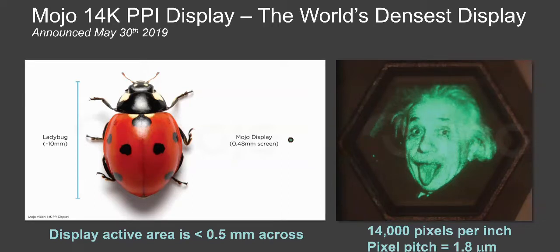So you can see on the left, here's a ladybug. And this is to scale an actual Mojo display chip. The actual lit up area is less than half a millimeter across. But when you look at it under a microscope, you can see what's on the right here, which is a nice picture of Albert Einstein.